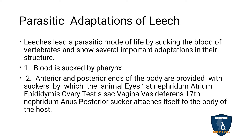Blood is sucked by leeches. The anterior and posterior ends of the body are provided with suckers. These suckers attach the leech to the body of the host. The body also has animal eyes, first nephridium, artery, epidermis, ovary, testis sacs, vagina, vas deferentia, and 17th nephridium. The posterior sucker attaches itself to the body of the host, and these features are attached to the body of the host — the special organs are attached to the host.